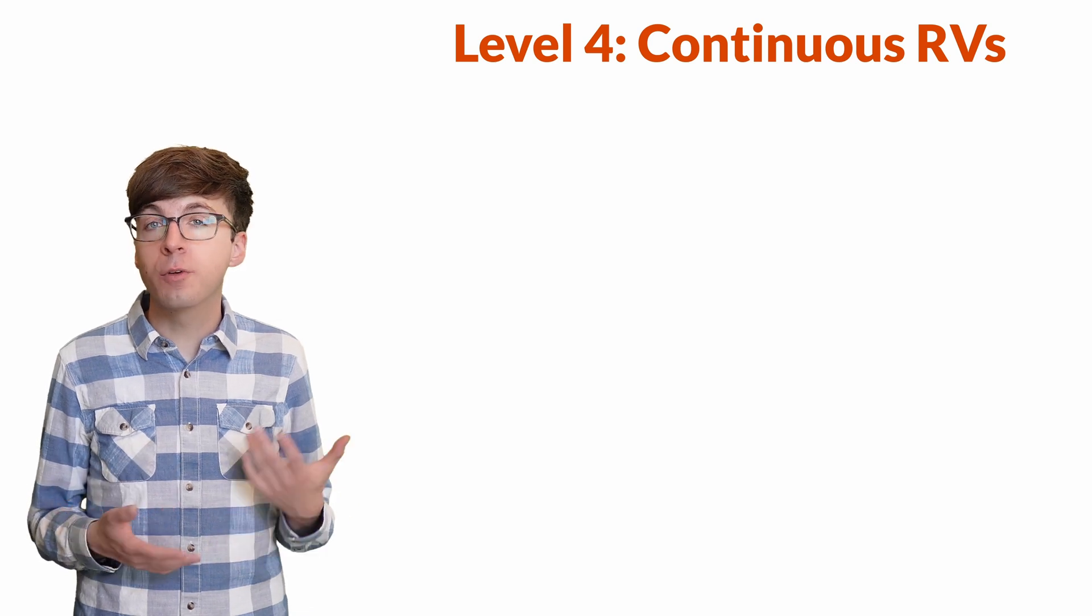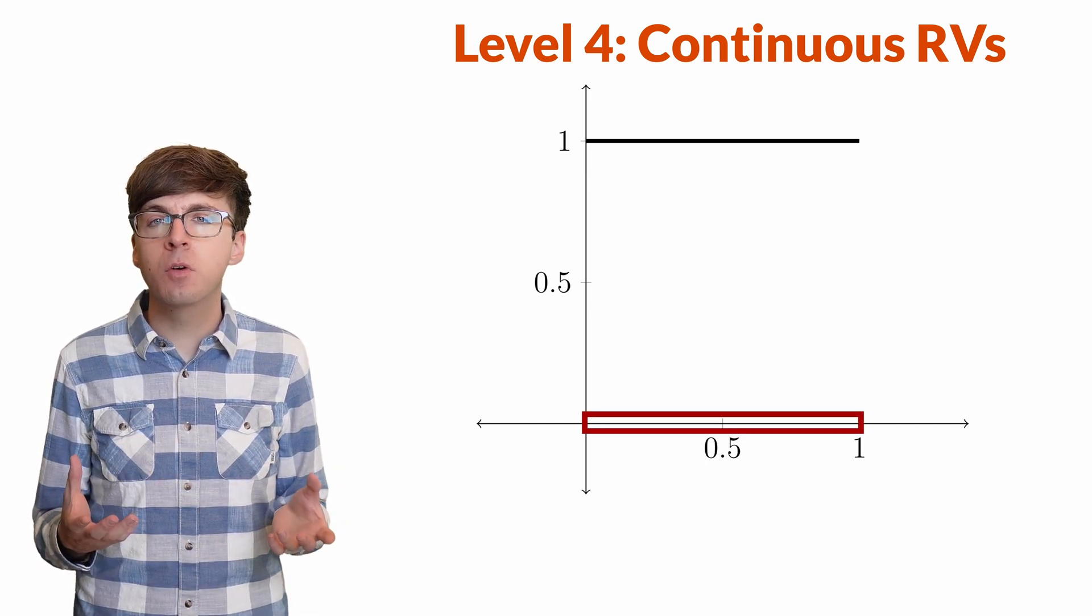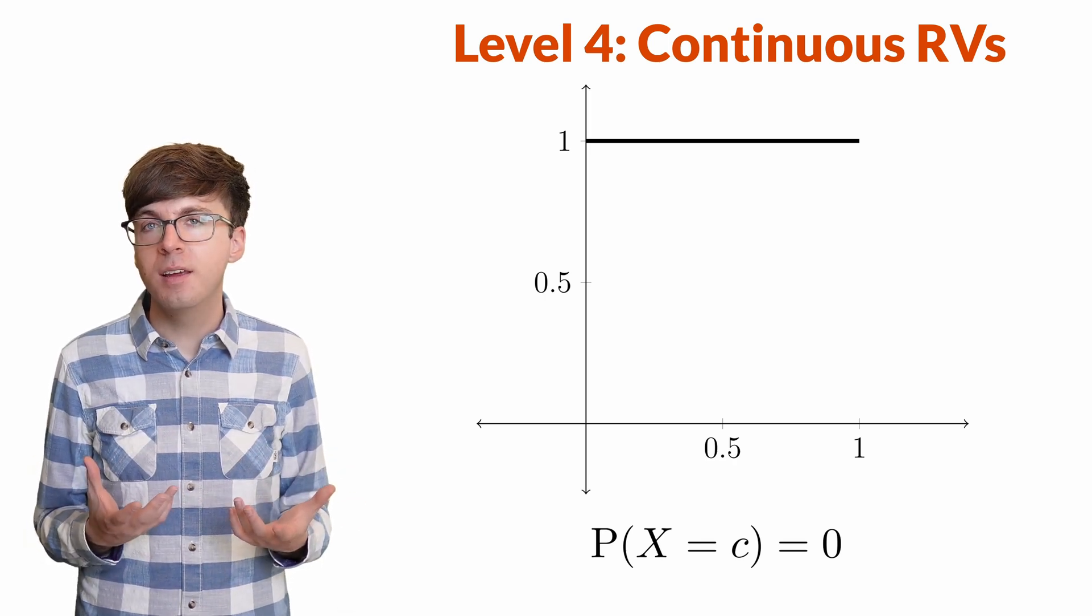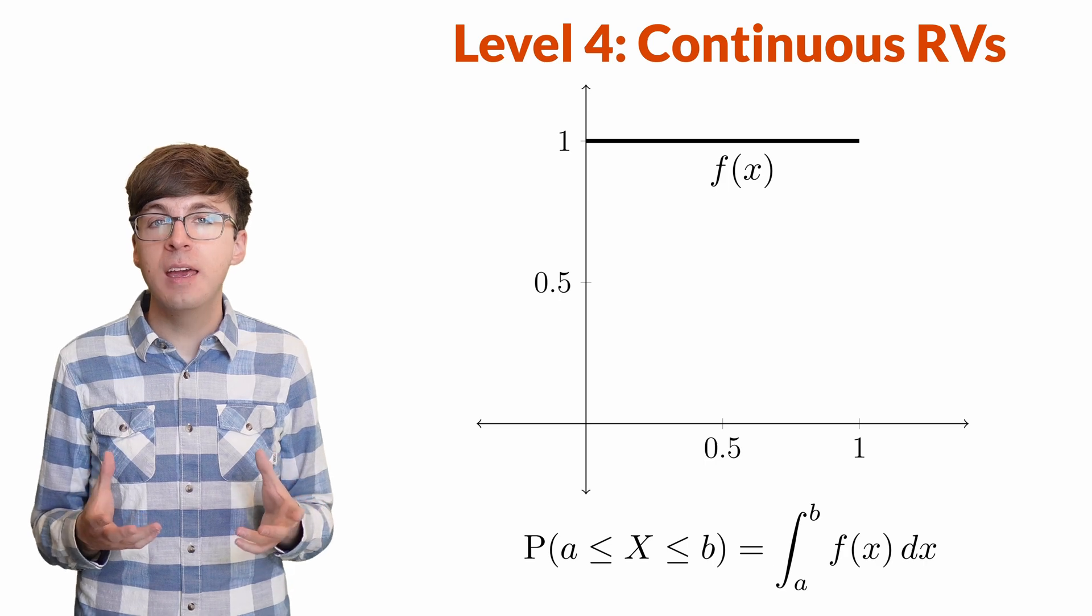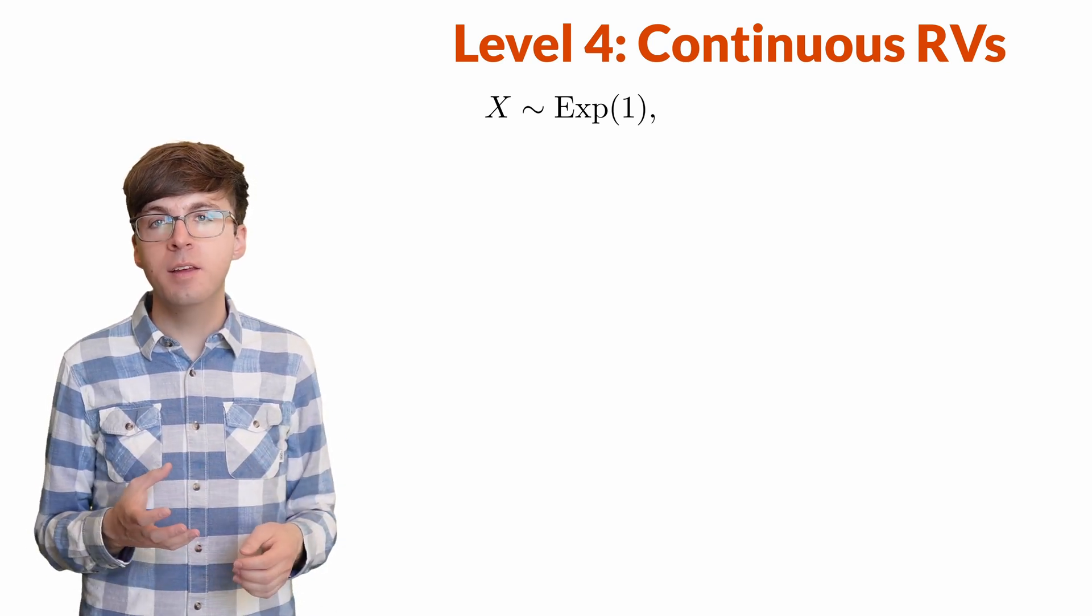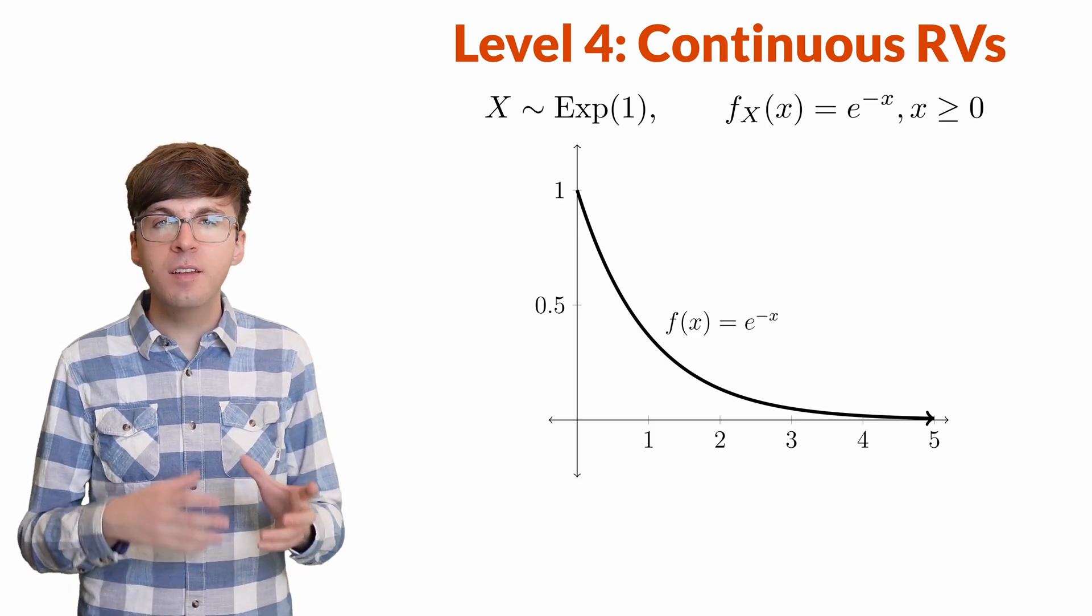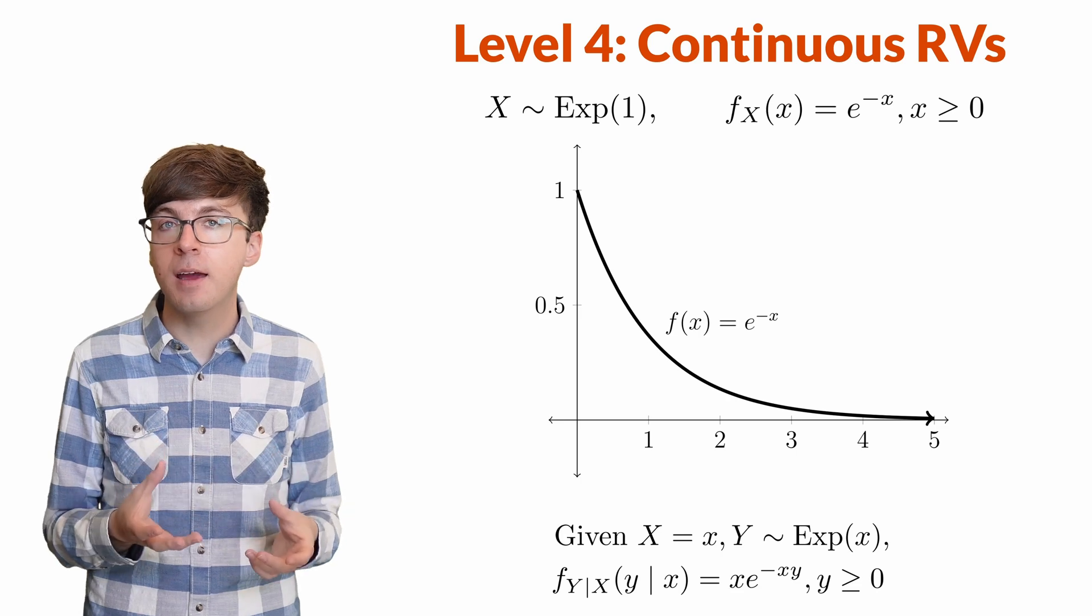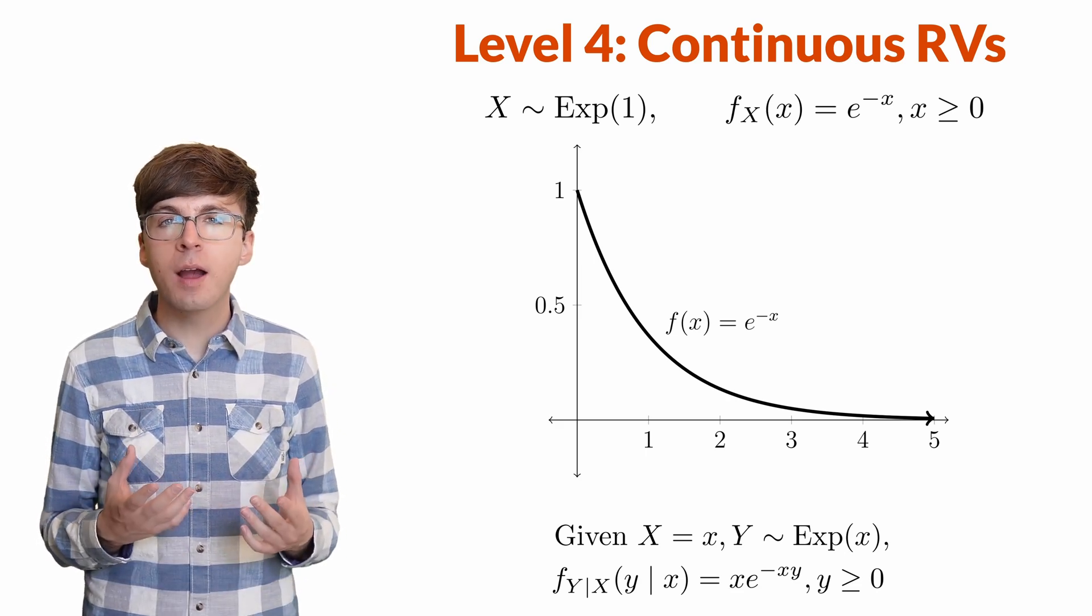For level 4, let's see how Bayes' theorem works for continuous random variables. Continuous random variables have uncountably many possible values. Usually they can be any real number within some interval. The probability a continuous random variable exactly equals any one number is zero. Instead we have a density function that we integrate to find probabilities. This allows us to work with uncountably many possible values and still have our probabilities between zero and one. Let's say x is an exponential random variable with rate one. This means its density function is f of x equals e to the negative x for x greater than or equal to zero. Then let's use this value as the rate for an exponential random variable y. So the conditional density function for y given x equals x is x e to the negative xy for y greater than or equal to zero.